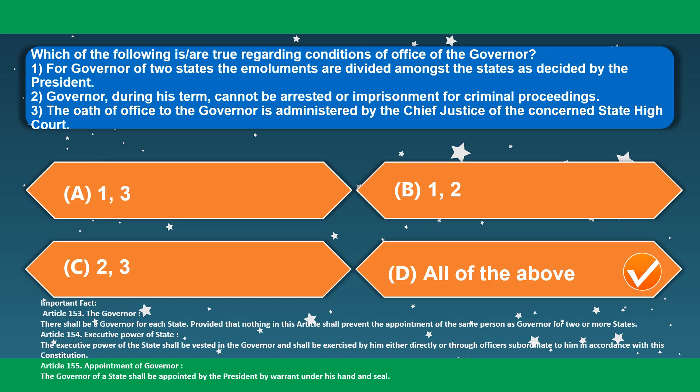Which of the following are true regarding the conditions of the Office of the Governor? For a Governor of two states, the emoluments are divided amongst the states as decided by the President — correct. A Governor during his term cannot be arrested or imprisoned for criminal proceedings — correct. The oath of office to the Governor is administered by the Chief Justice of the concerned State High Court — correct. So the correct option is option D.